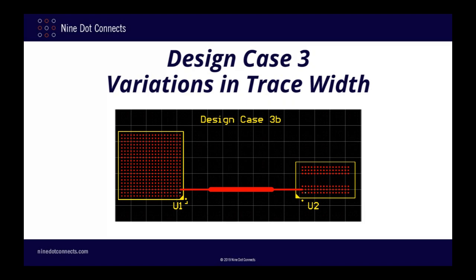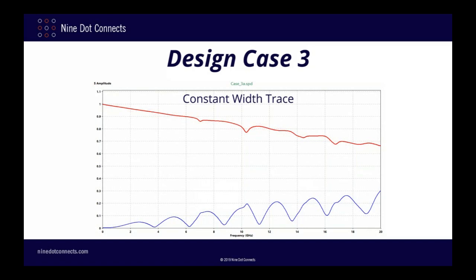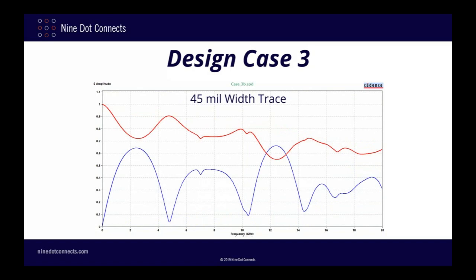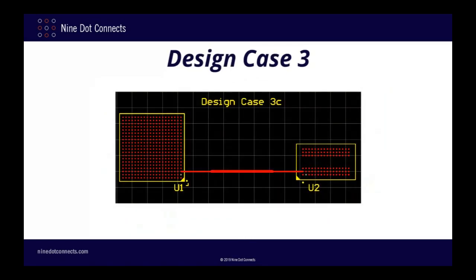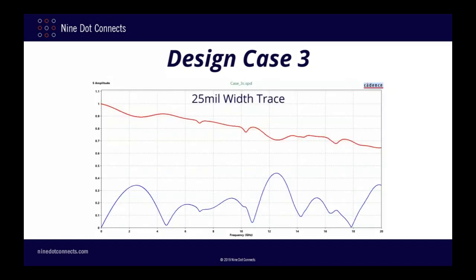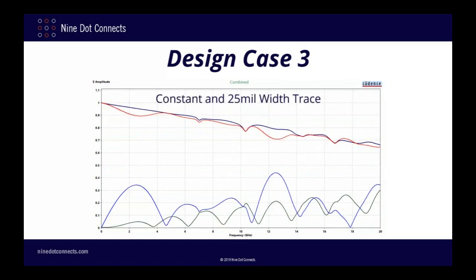The S-parameters of the variable trace width case show much more transmission loss in our target frequency range as well as a lot more reflected energy. However, this was a pretty dramatic difference in trace width. A more realistic scenario would be a trace width going from 15 mils to 25 mils. When we perform our simulations, we still see an increase in transmission loss but it is not as dramatic, and the same can be said for the reflected energy. Overlaying the results from both routing paradigms — constant 15-mil trace versus one with a 25-mil segment in the middle — shows some changes.